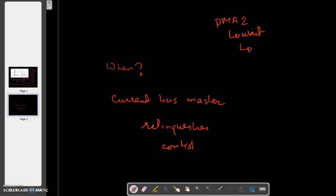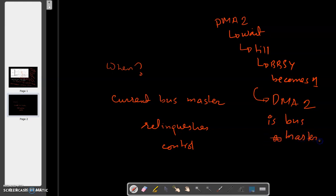DMA controller 2 will wait. It will wait till BBSY becomes 1. When BBSY becomes 1, the DMA controller 2 which asserted the BR can now control the bus. So BBSY becomes 1 and now the DMA 2 is the next bus master.